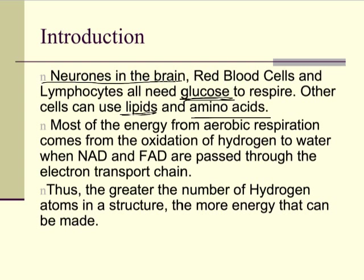You know already that most of the energy from aerobic respiration comes from the oxidation of hydrogen to water, when NAD and FAD are passed through the electron transport chain. That oxidative phosphorylation is where most of the energy comes from. Very little is gained through glycolysis, the link reaction, or Krebs itself — most of the ATP is made from the electron transport chain.